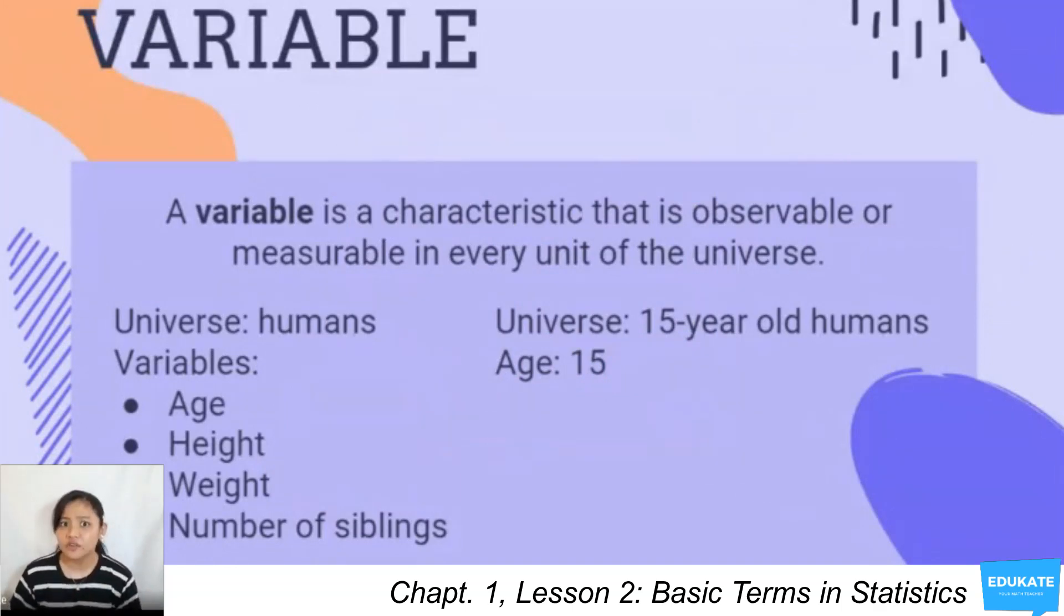Usually, a variable takes several values, but occasionally, a variable can only assume one value. If the variable can only assume one value, it is what we call a constant. For instance, we have here an example: universe, humans. Our variables are age, height, weight, number of siblings.